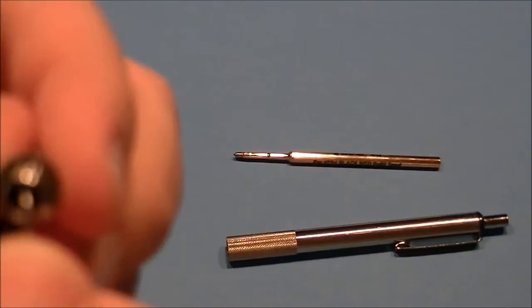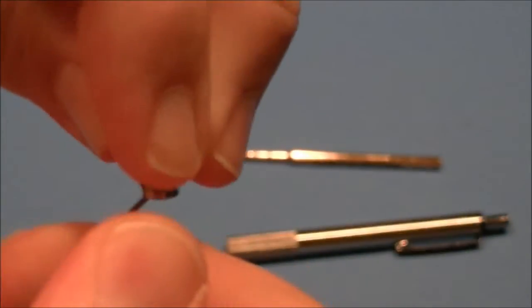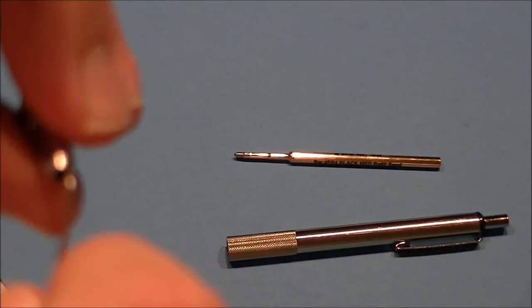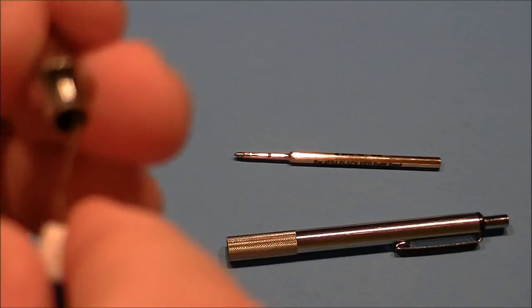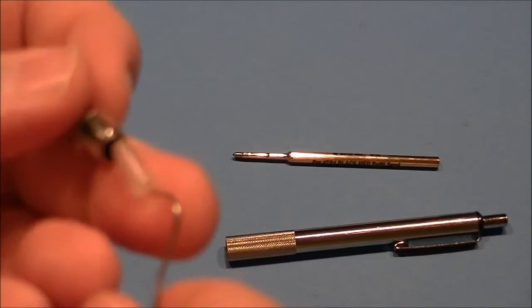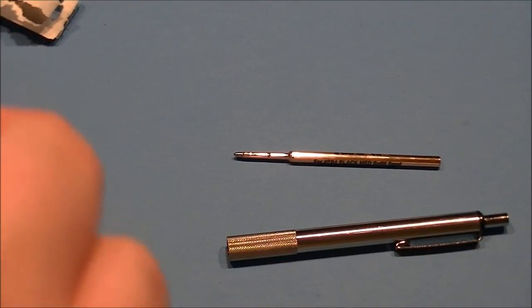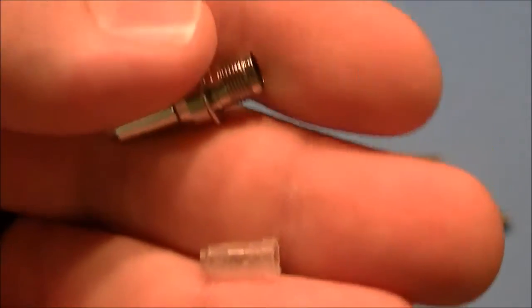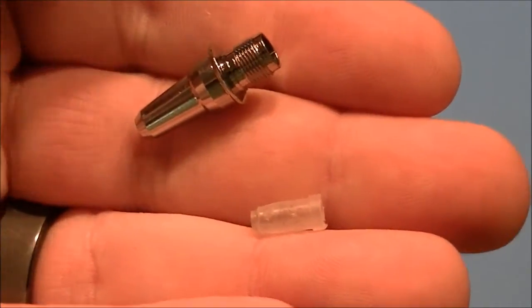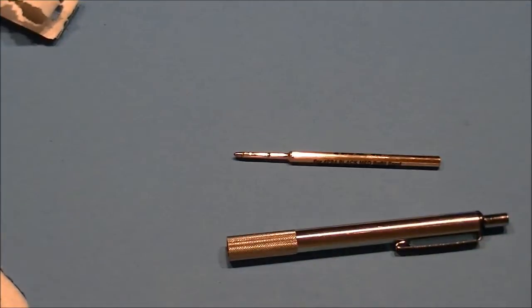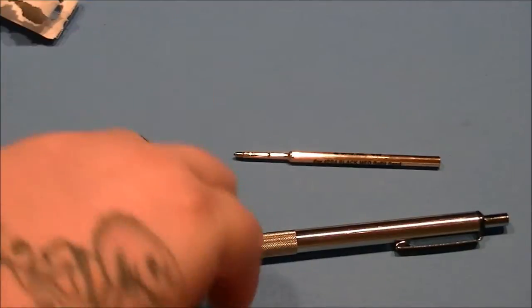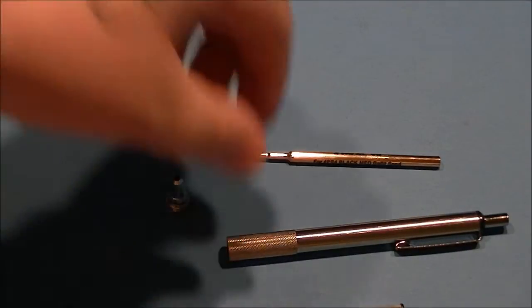There is a plastic. There we go. There is a little plastic thing inside the tip of the pen. So don't throw that away in case you want to put your regular thing back in there. Alright.